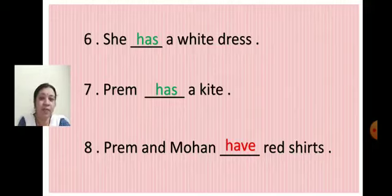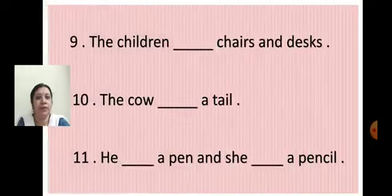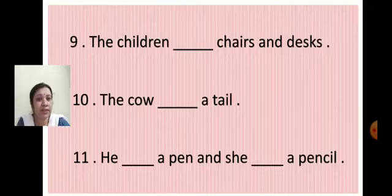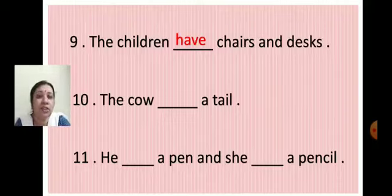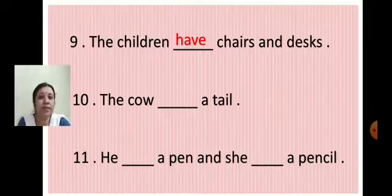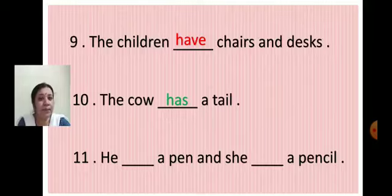H-A-V-E. Done? Next: The children dash chairs and desks. The children - there are more children, so we write have. The children have chairs and desks. H-A-V-E. Next: The cow has a tail. H-A-S. Has a tail.